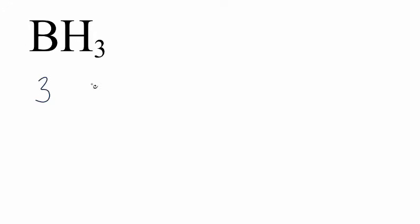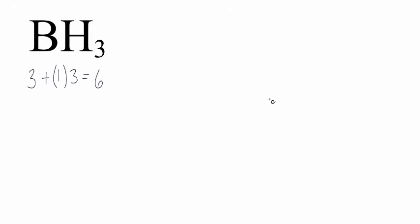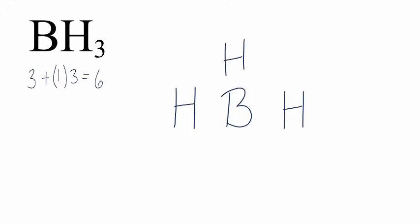For the BH3 Lewis structure: boron has three valence electrons — it's in group 13, sometimes called 3A. Hydrogen has one, and we have three hydrogens. So we have three plus three, a total of six valence electrons for BH3. Since hydrogen always goes on the outside, we'll put the boron in the center, then put the three hydrogens around it. We'll start by putting pairs of electrons between atoms to form chemical bonds. We've used 2, 4, 6 valence electrons — all six. So how do we complete the octet for BH3? It turns out there are quite a few exceptions to the octet rule. For boron, it's one of those exceptions: boron only needs six valence electrons.